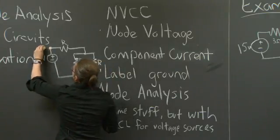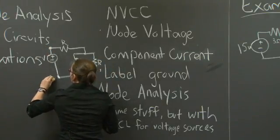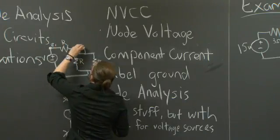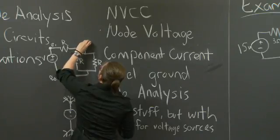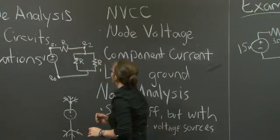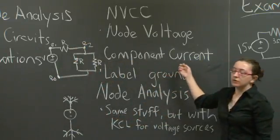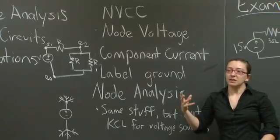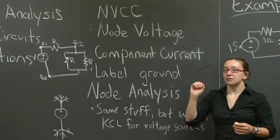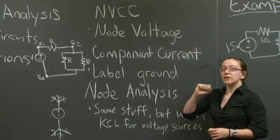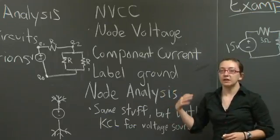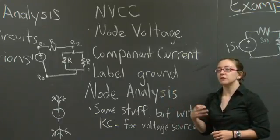To do that, we're going to label our nodes, which are anywhere our components connect. We're also going to go after the component current. When we're doing KCL, we typically look at the flow in and out of a particular node. At this point, we're going to look at the flow through a given component. So we're also going to label all of the currents associated with our circuit.